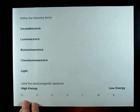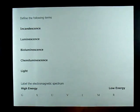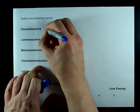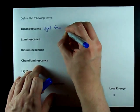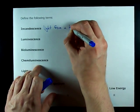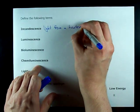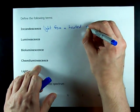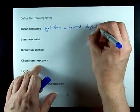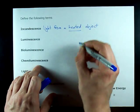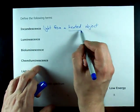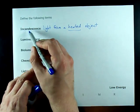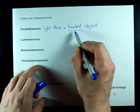All right, some quick definitions just to refresh your memory. Incandescence is light from a heated object — it's light when heat is also being given off. Incandescence applies to things like candles because candles are hot.